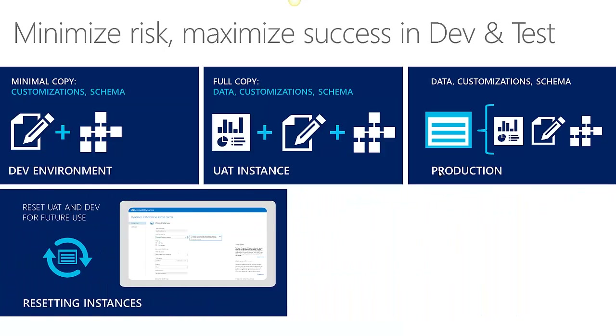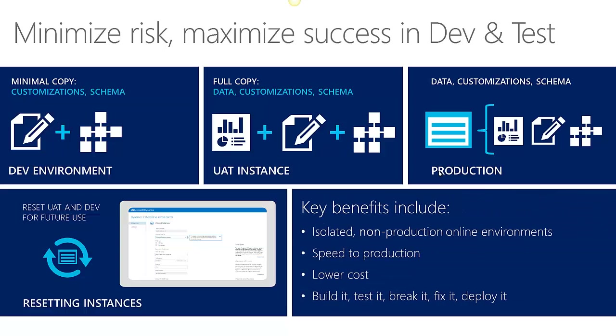These instances can be reset back to default. You can also keep images of them, one image at a time per instance. So if you have an image with configuration, you can default back to that. The key benefits of these organizations is that they are isolated, non-production online environments hosted on the same environment as production instances, so the speed is comparable. The same performance that you get on your production environment is what you'll get on the DEV and test environments. They are a lower cost than a full production organization.